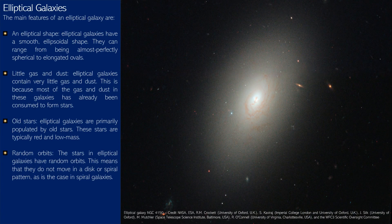The main features of an elliptical galaxy are: an elliptical shape — ranging from almost perfectly spherical to elongated ovals; very little gas and dust, as most has already been consumed to form stars; old stars, typically red and low mass; and random orbits, meaning stars do not move in a disk or spiral pattern as in spiral galaxies.